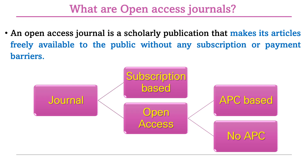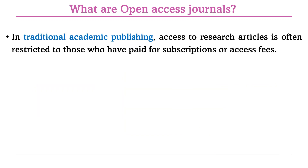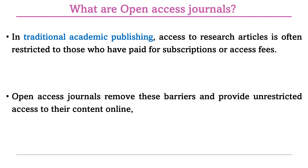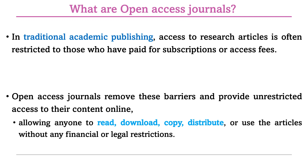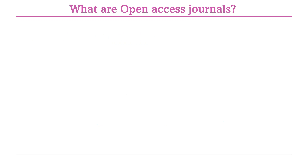In the case of open access journals, we have two types: APC-based, where the author pays an article processing charge, and journals with no APC, which are free open access journals. Open access journals remove barriers and provide unrestricted access to content online, allowing anyone to read, download, copy, distribute, and use these articles without any financial or legal restrictions — including even figures.